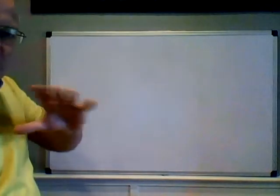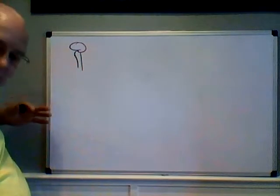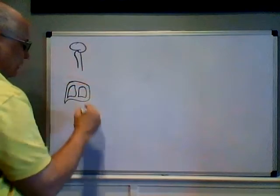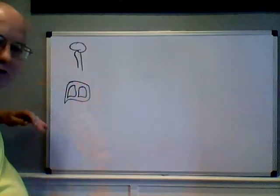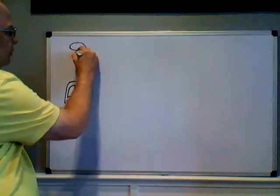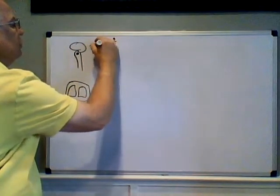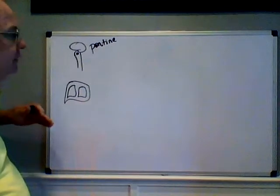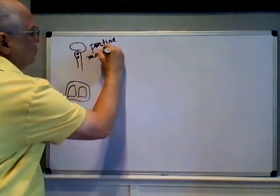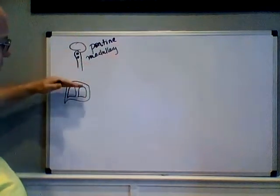Our brain and spinal cord — our central nervous system — has major control over many body systems. There are two major respiratory centers in the brain. Up in the pons is the pontine respiratory group, and down in the medulla is the medullary respiratory center. These two centers are each subdivided into two smaller centers, and they're going to affect our breathing rate.